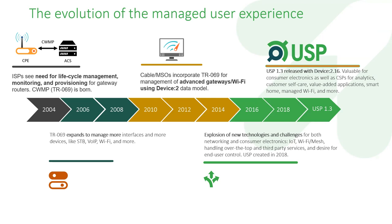In 2015, we all got together and said it's time to think about what's next for TR69. That gave birth to USP, which version 1.0 was created in 2018. Since then we've gone through three revisions. The most recent was USP 1.3, released with TR181 device 2.16, adding capabilities like big data analytics, customer self-care, value-added applications to the gateway, managing smart home, and having a complete picture of managed Wi-Fi and more.